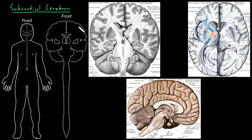To orient you, this illustration right here is looking from the front, just like my outline over here. We're looking from the front and we've cut down into the brain — we're looking into the brain tissue. This view from the front is cut at one level here, and it's cut a little farther back over on this side.